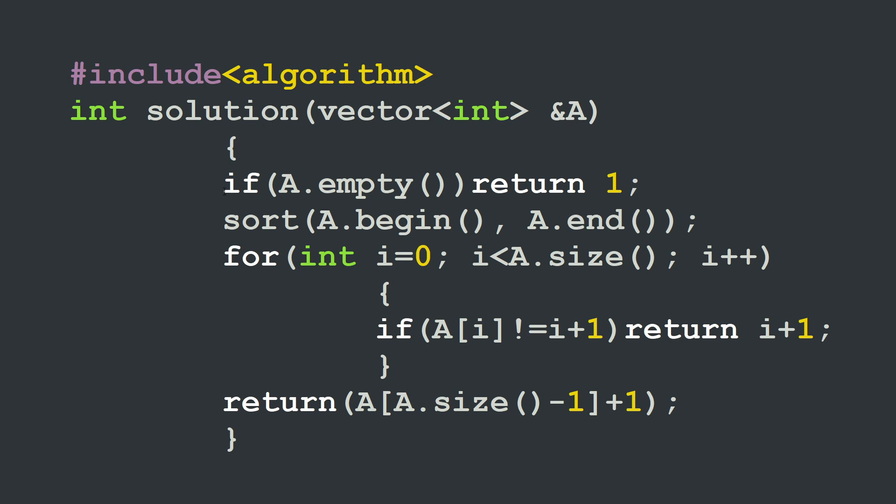First I will start by testing if my vector is empty, because in this case I should return the value 1. This is our first edge case. And I know we've already mentioned this - it's not really clear in the description of the problem, but it's part of the solution. And if you want to have 100% score, we should start by using this test.